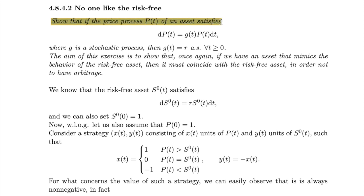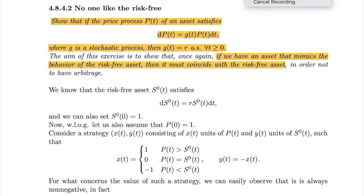Otherwise, we can build a strategy that proves to be an arbitrage. To avoid arbitrage, we can show that if the price process P(t) of an asset satisfies the differential equation dP(t) = g(t)P(t)dt, where g(t) is a stochastic process, then g(t) must equal R, the risk-free rate, almost surely for every t. In other words, if an asset mimics the behavior of the risk-free asset, it must be the risk-free asset.